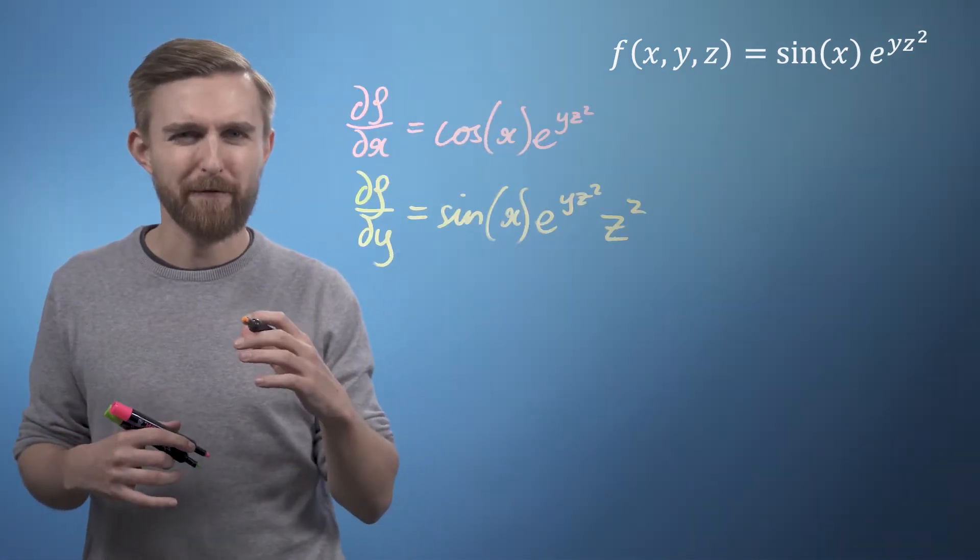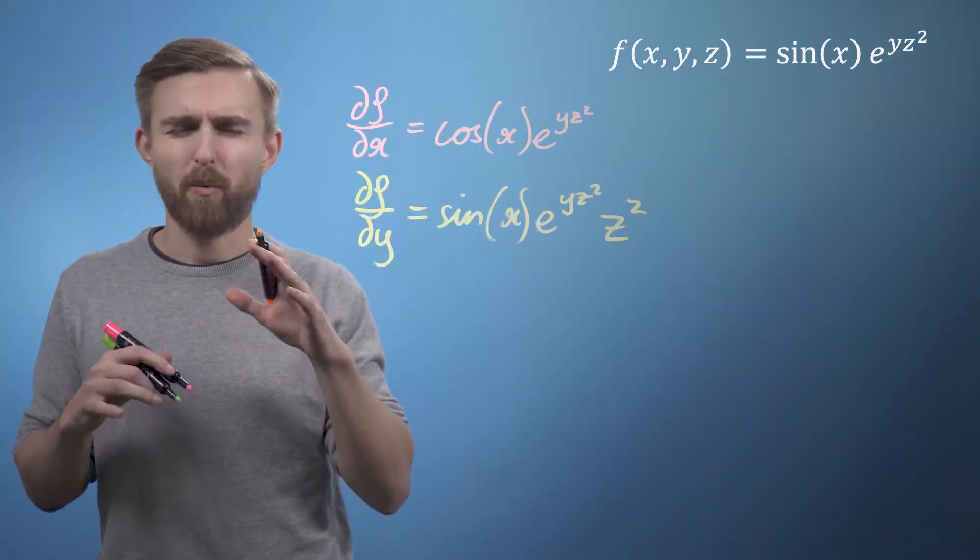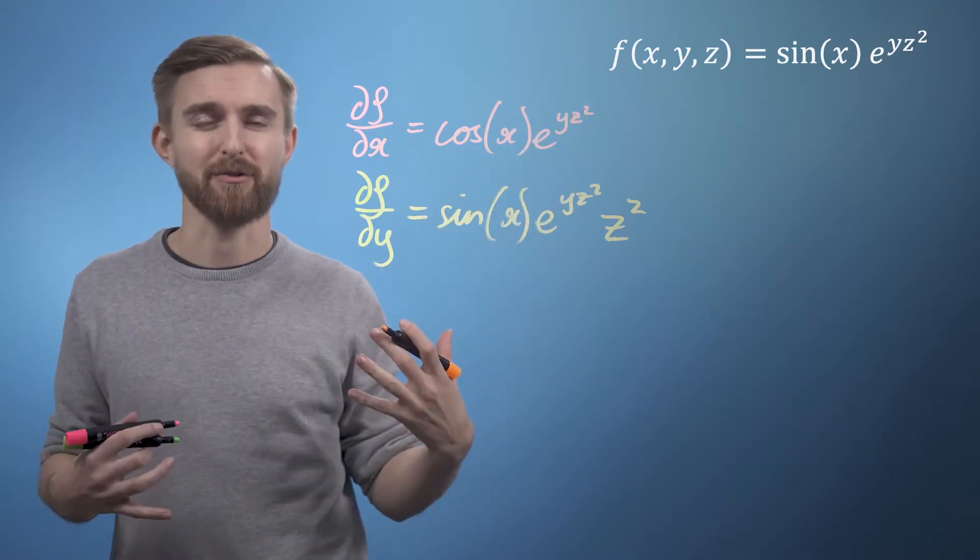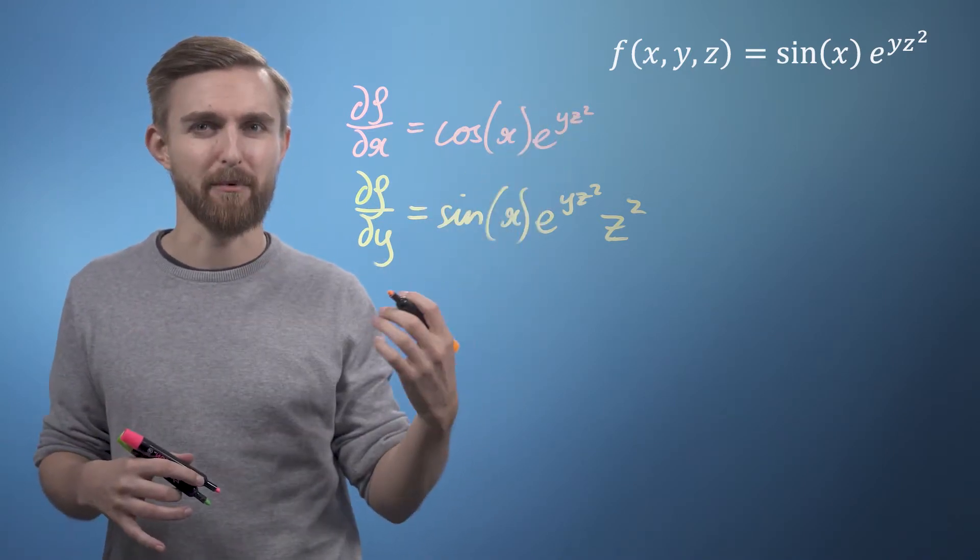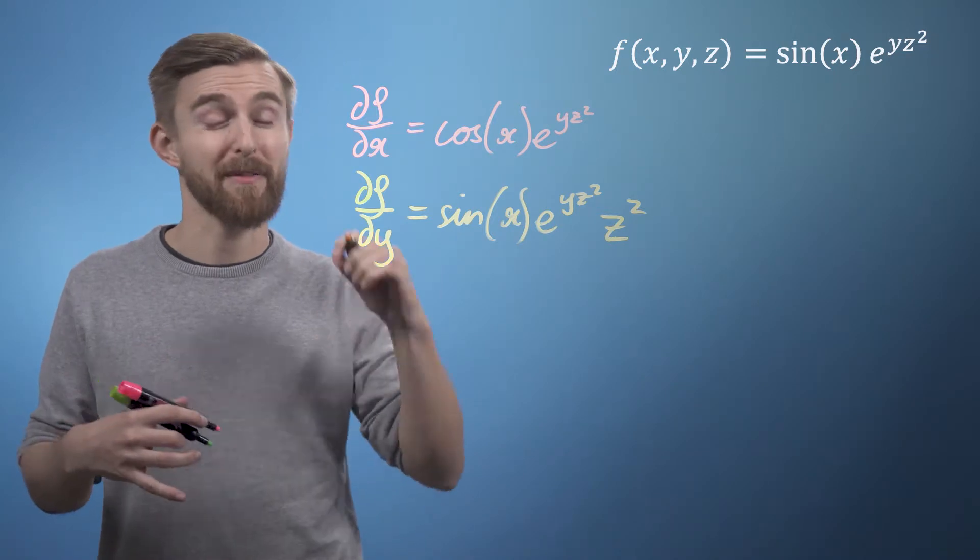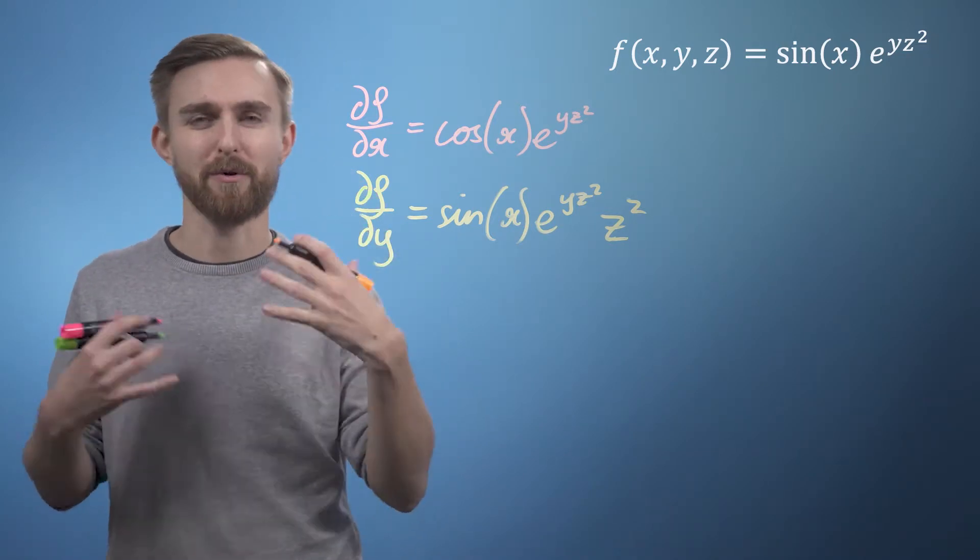Lastly, we'll differentiate with respect to z. Once again the only z is in the exponential term, so similar to the previous example, we simply multiply through by the derivative of the exponential with respect to z.